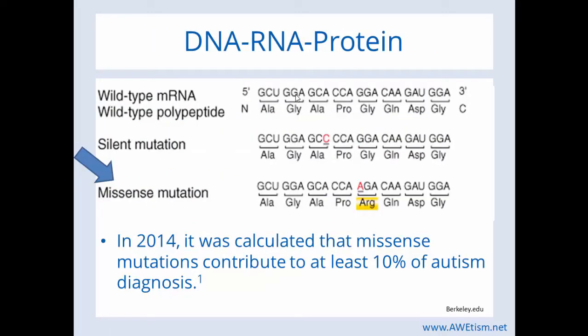Let's get back to that first sentence from the beginning of this video. In 2014, it was calculated that missense mutations contribute to at least 10% of autism diagnoses. You now know a missense mutation means the resulting amino acid is different — a G in the RNA changed to an A results in a different amino acid in the protein. That is what a missense mutation is.